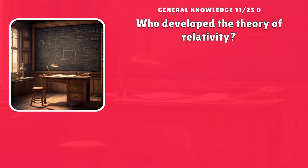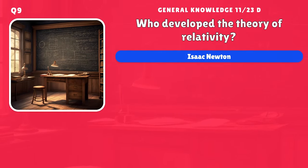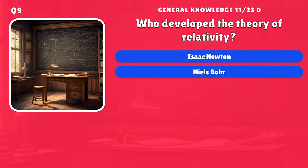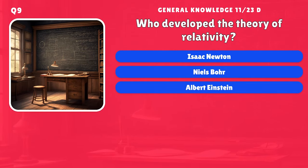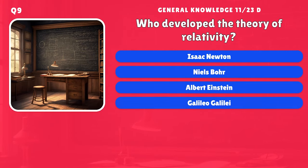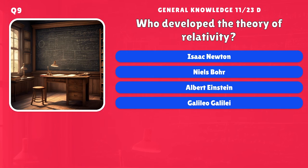Who developed the theory of relativity? A) Isaac Newton, B) Niels Bohr, C) Albert Einstein, D) Galileo Galilei.